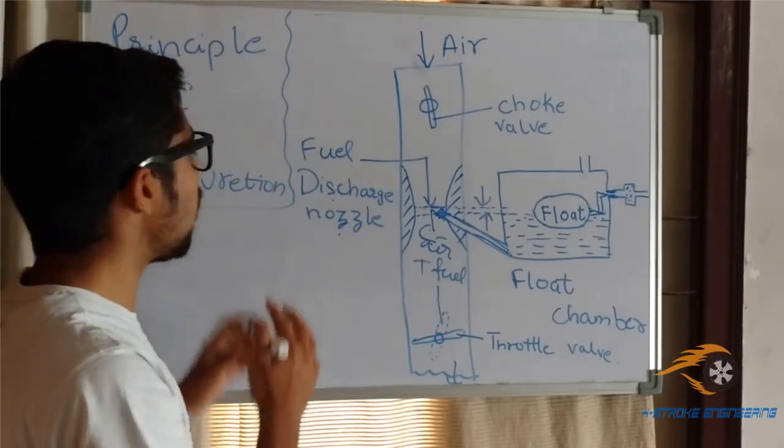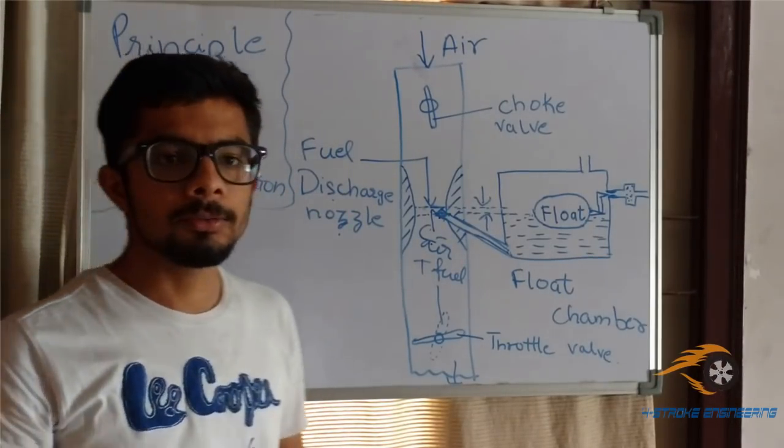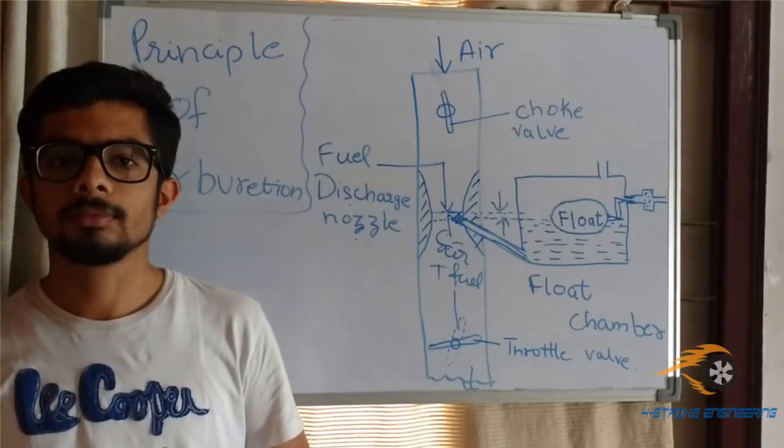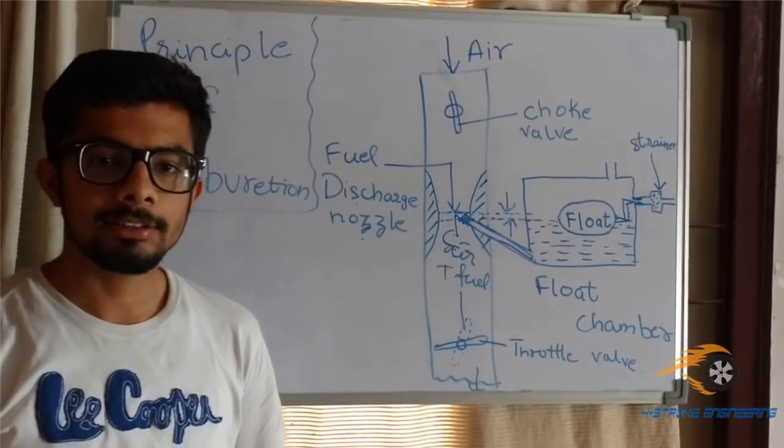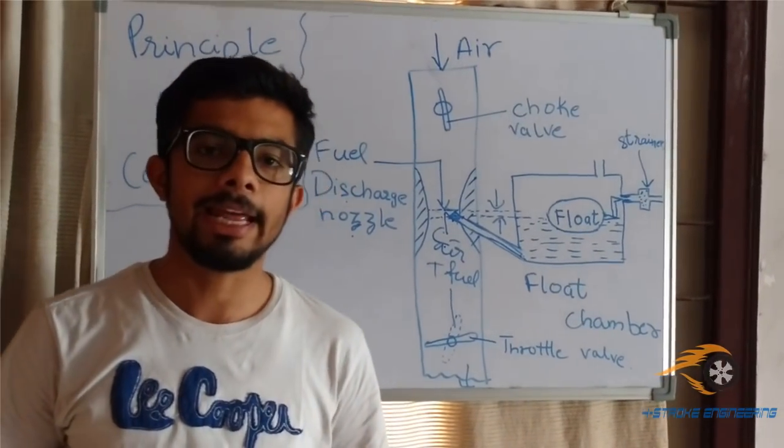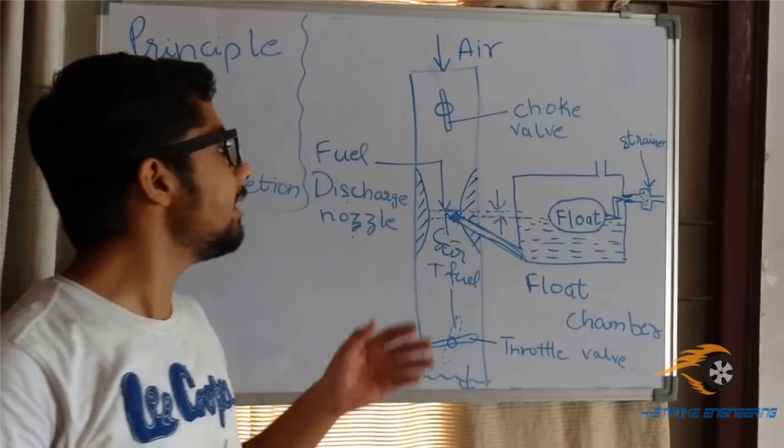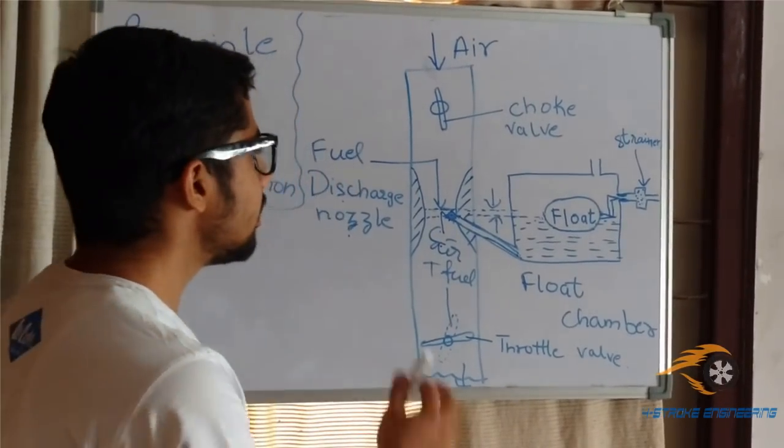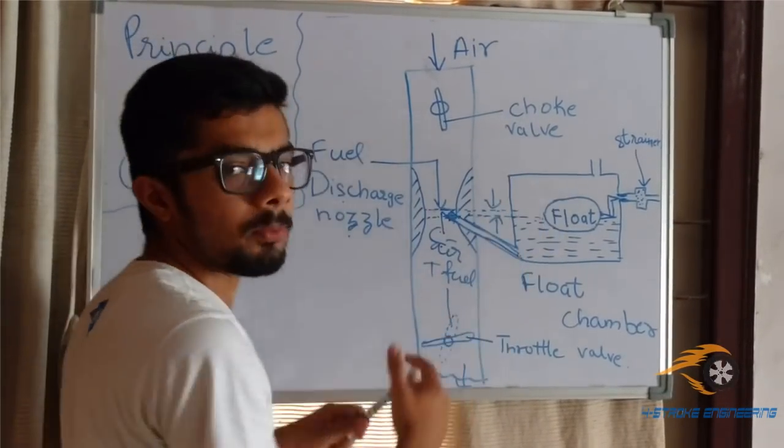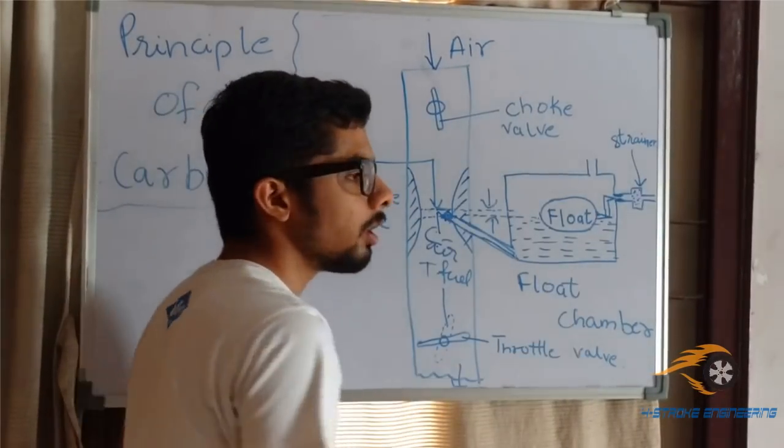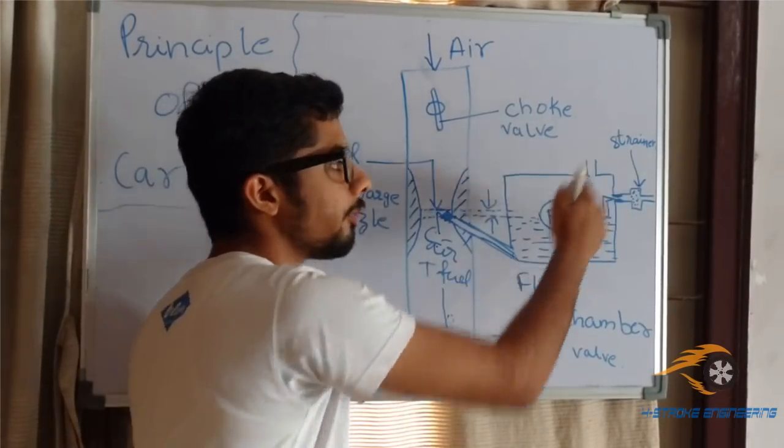Well, this is the basic principle of carburation that I have explained to you. The principle of carburation that I explained will be applicable in simple carburetor. The simple carburetor consists of these many components starting from a strainer. Let me start with some information about strainer.